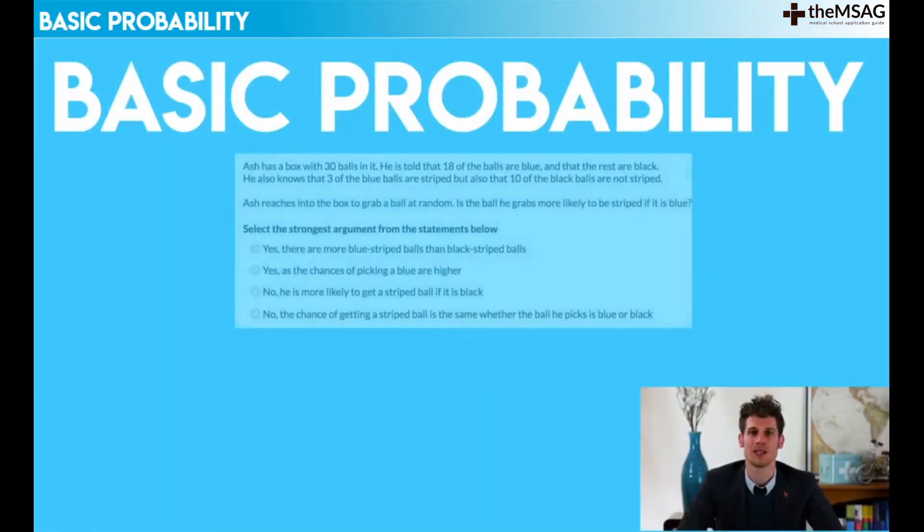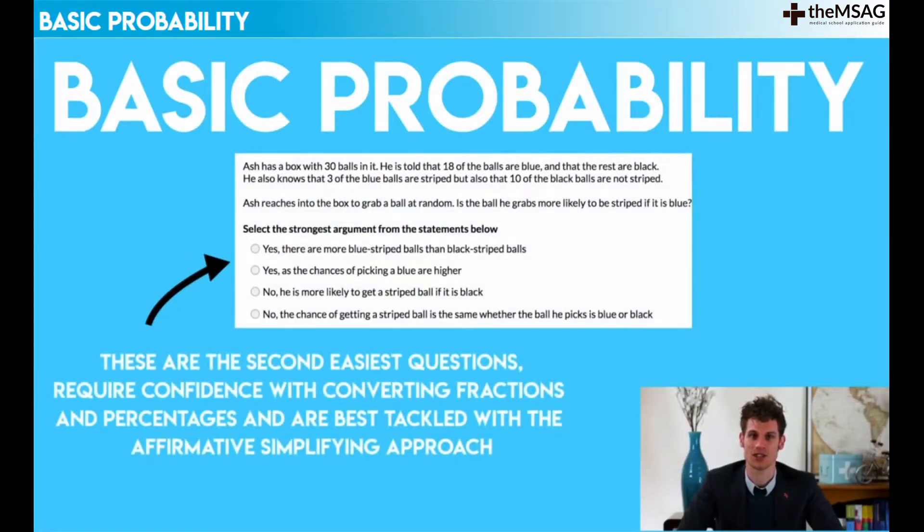Basic probability. These are the second easiest questions, though they require confidence with converting fractions and percentages and are best tackled with the affirmative simplifying approach. These types of questions should take you between 20 to 40 seconds.